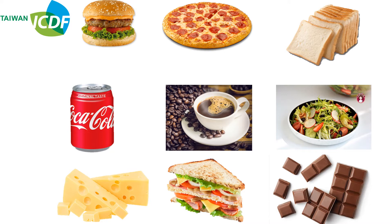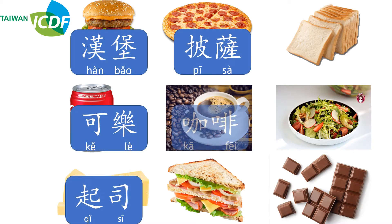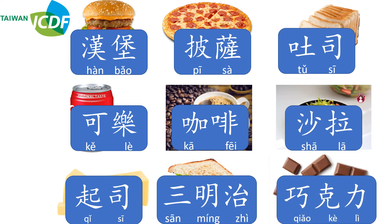At the beginning, take a guess at the meaning of each word while I read: 汉堡，可乐，起司，披萨，咖啡，三明治，吐司，沙拉，巧克力. I believe you have an idea of what I'm saying. Now I will show you the words, and let's read them together again: 汉堡，可乐，起司，披萨，咖啡，三明治，吐司，沙拉，巧克力.